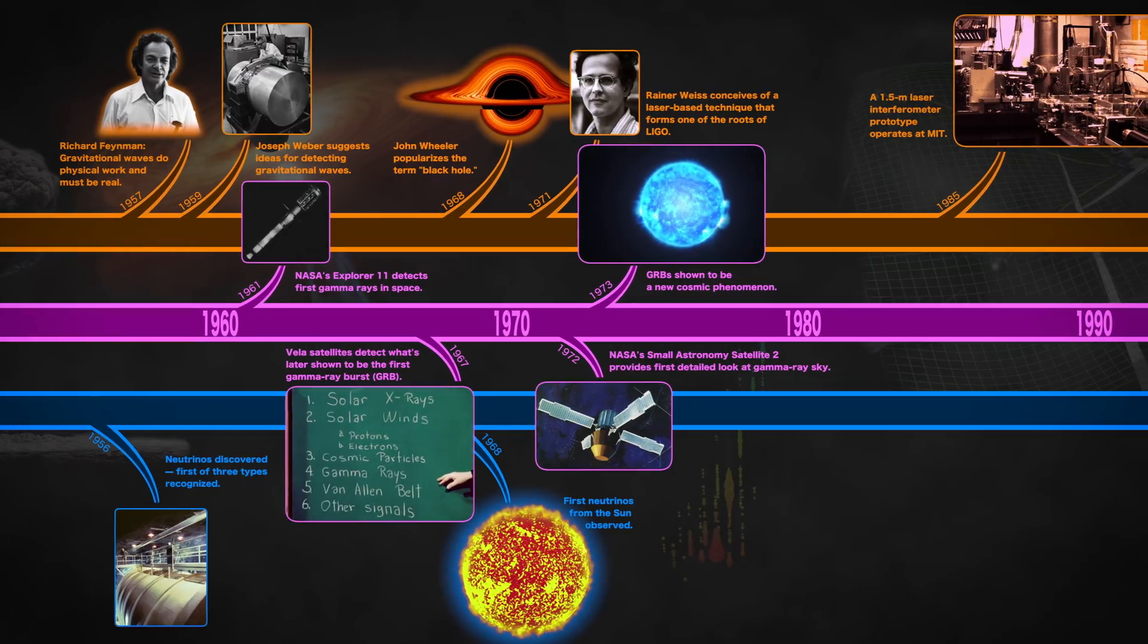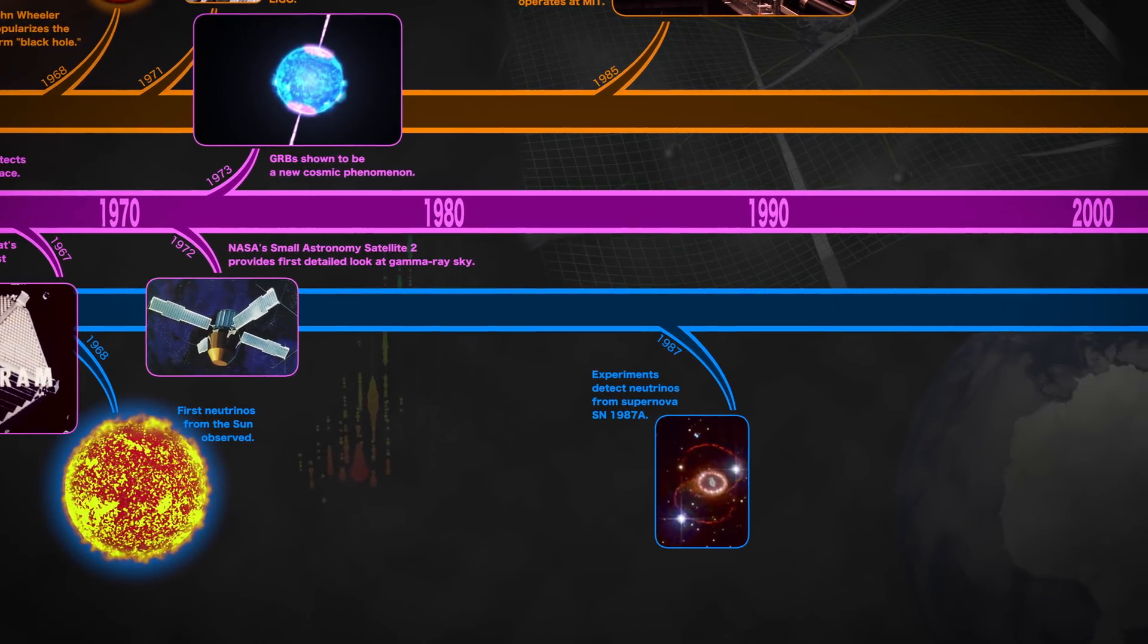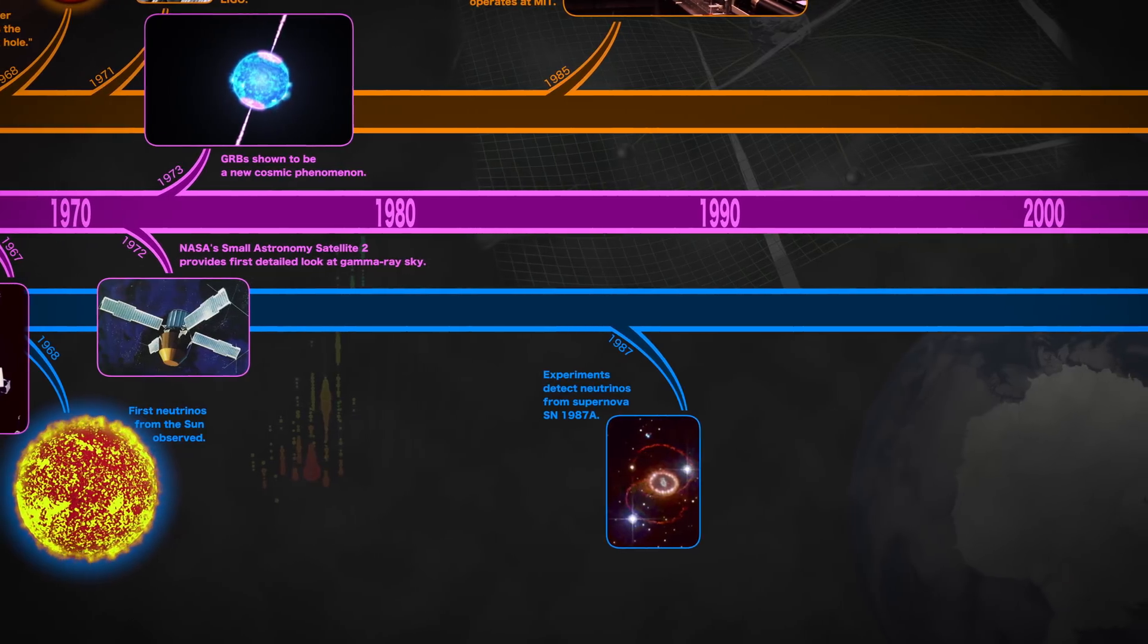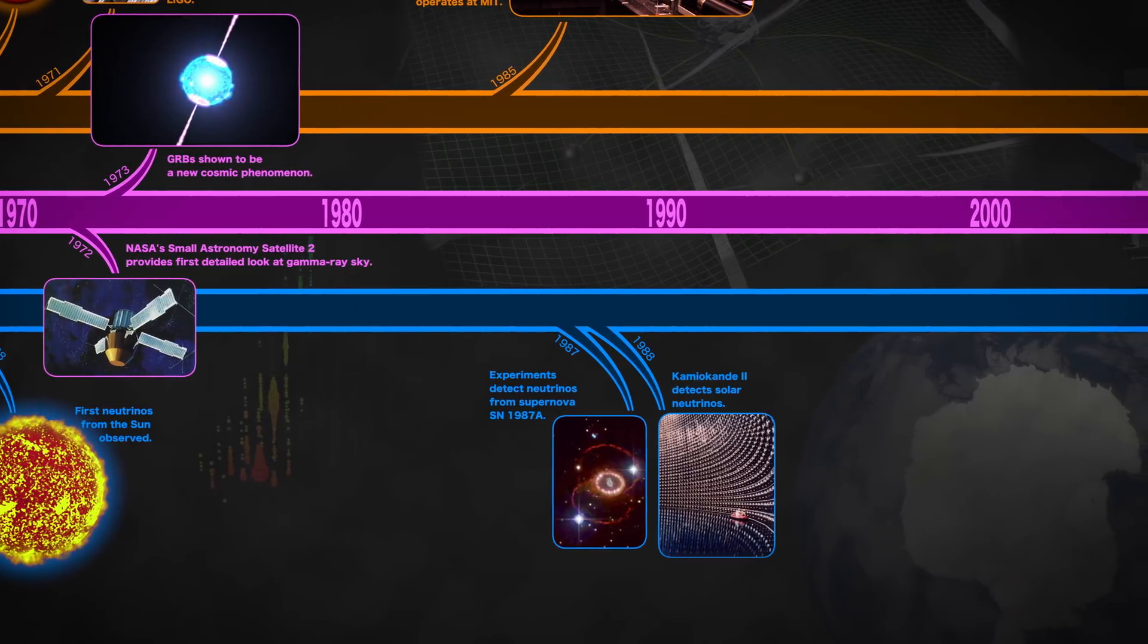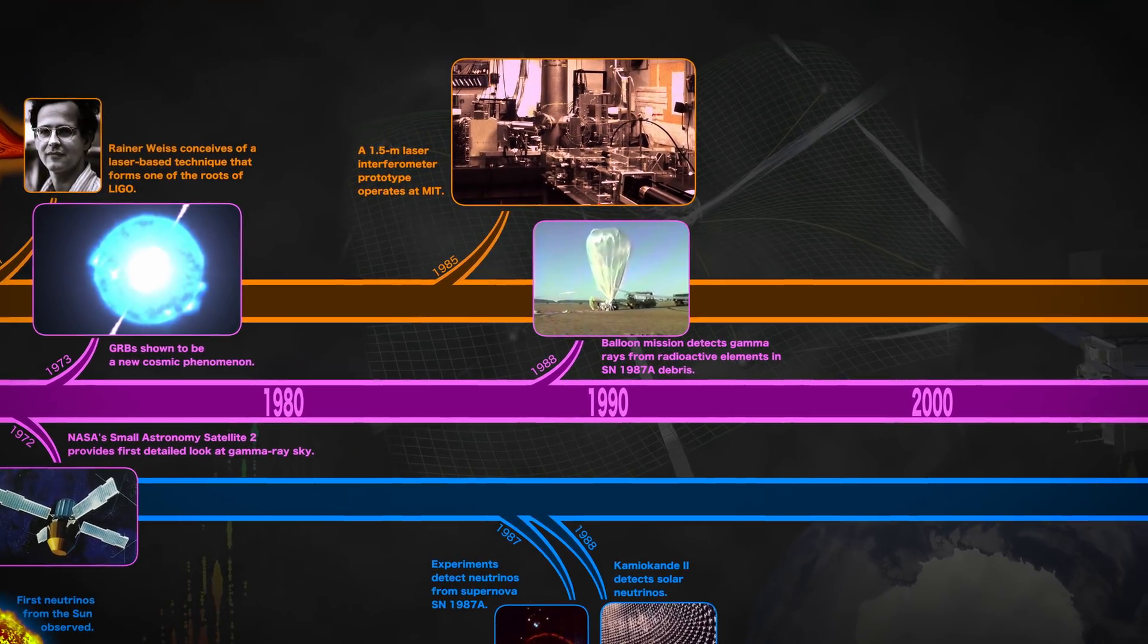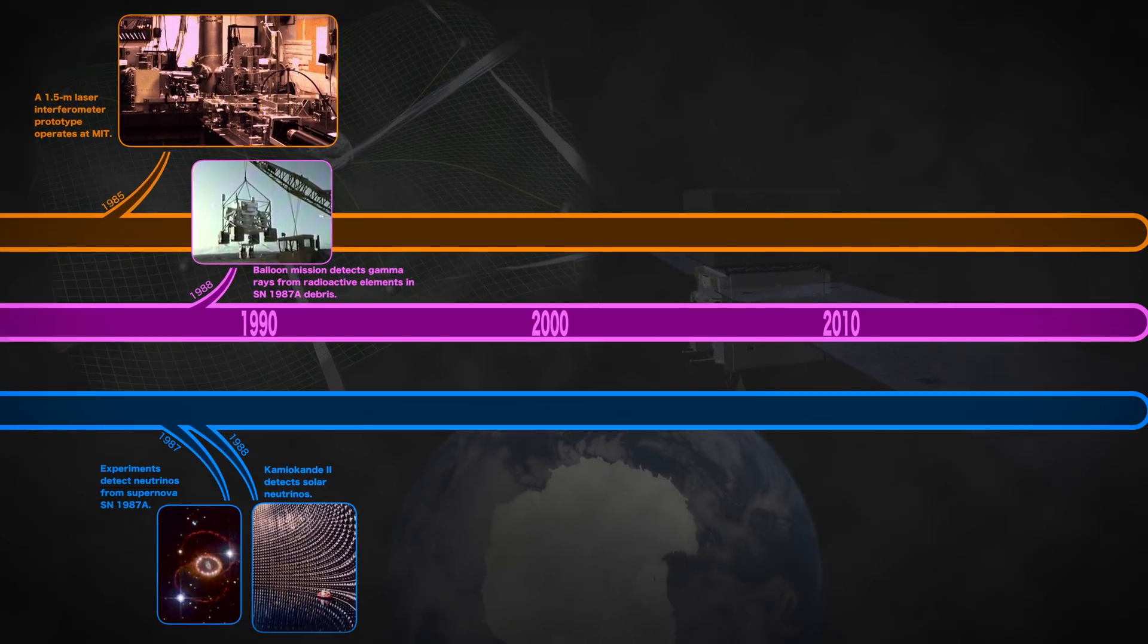1987 delivered the brightest supernova in nearly 400 years. Three experiments caught neutrinos from the star's collapse. Instruments on balloons saw gamma rays from radioactive elements in the explosion's debris.